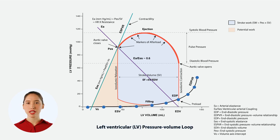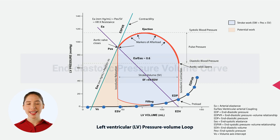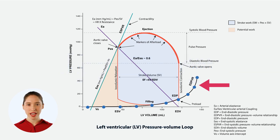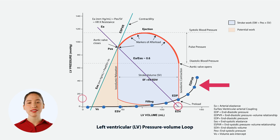Today we're going to explore an important concept in cardiology and critical care medicine known as the end diastolic pressure volume curve, or EDPVR. This curve helps us understand the relationship between the volume of blood in the left ventricle at the end of diastole, which is when the heart is fully relaxed, and the pressure inside the ventricle at that same point.